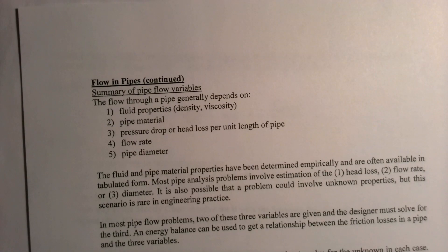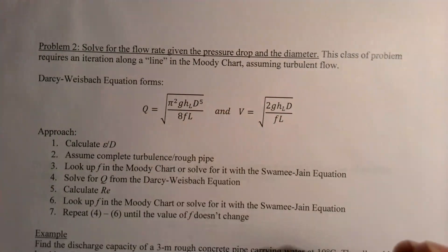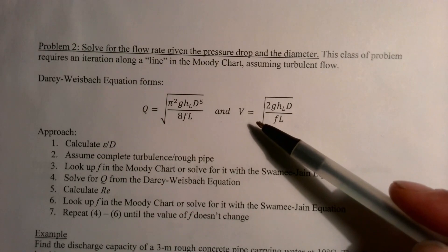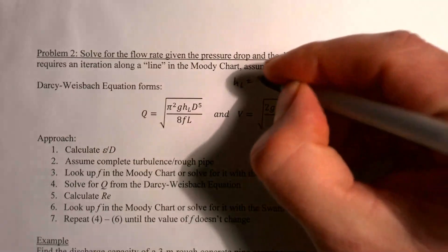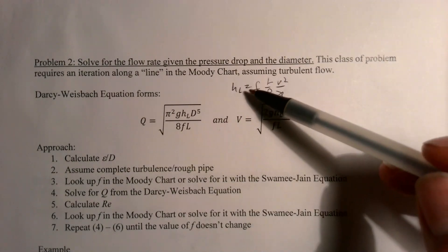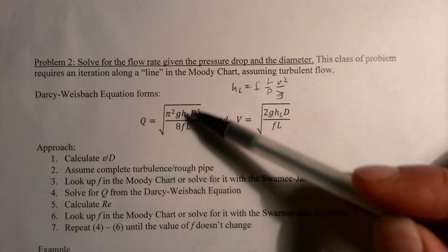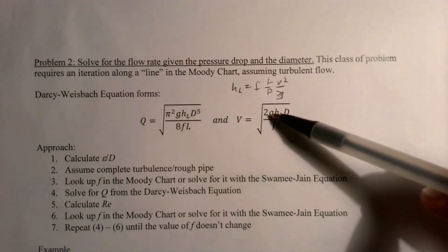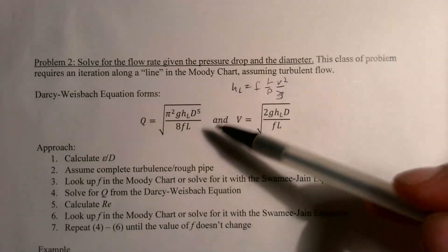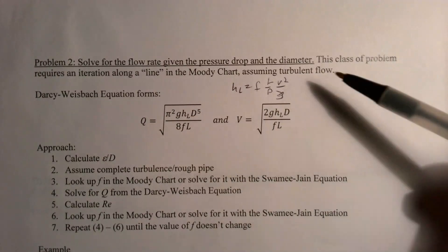These problems can still be solved without too much trouble if you know how. We're going to solve for the flow rate. If you rearrange the Darcy-Weisbach equation — its most common form is h_L = f·(L/D)·(V²/2g) — and solve for velocity, it looks like V = sqrt(2g·h_L·D / f·L). Then solving for flow rate using A = π·D²/4, you get Q. These are all really the same equation, just rearranged.